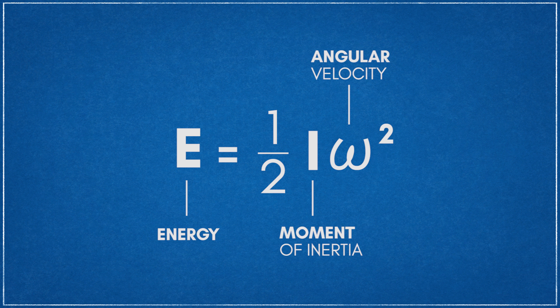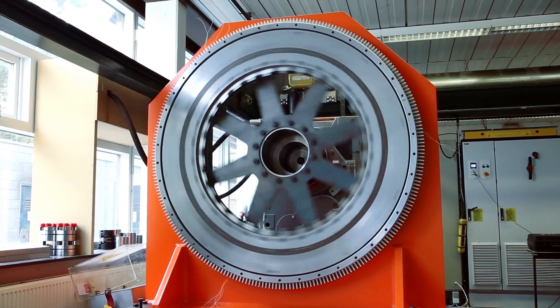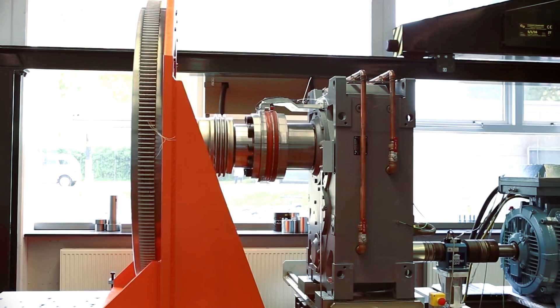In effect, increasing the rotating mass, optimizing the shape, or increasing rotational speed of the rotor allows it to store more energy. In practice, these three properties are constrained by several design factors.